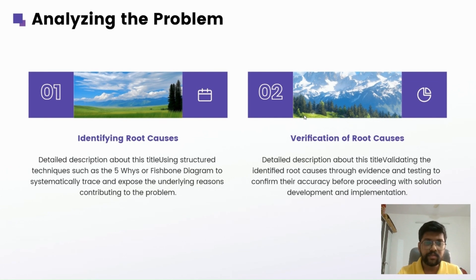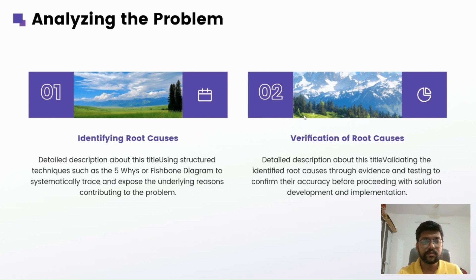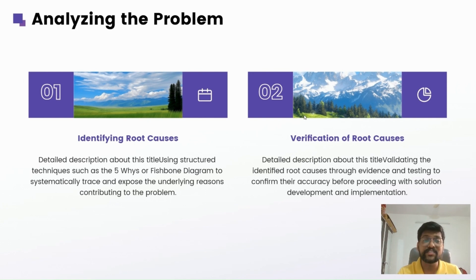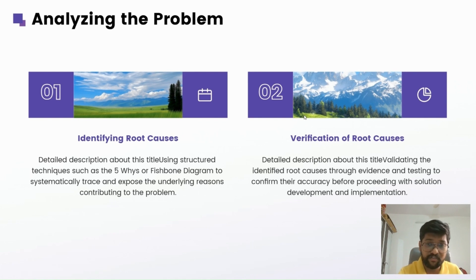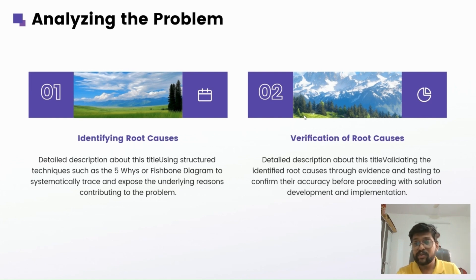The second step is analyzing the problem. This involves two parts: first, identifying the root cause using structured techniques such as the 5 Why technique or a Fishbone diagram; and second, verifying the root cause. You need to validate the identified root cause through evidence. For example, if the server was down for 45 minutes, you should have logs showing the server was down for 45 minutes and that the application was also down, to confirm accuracy before proceeding with solution development.